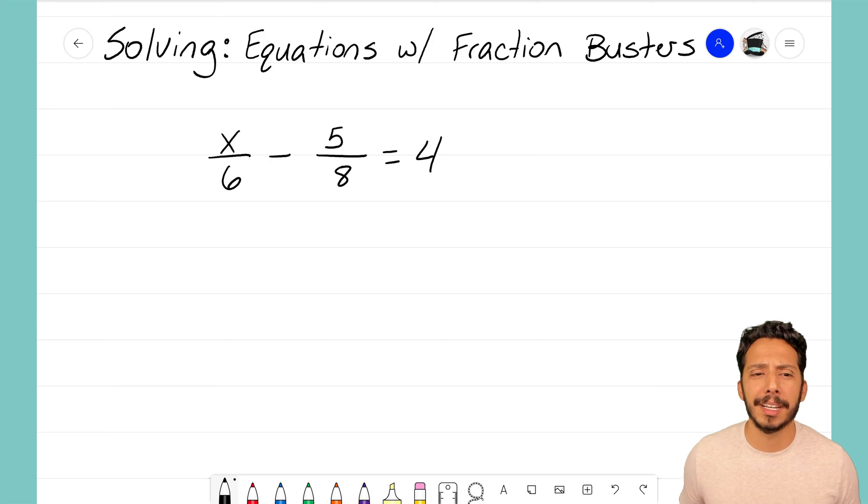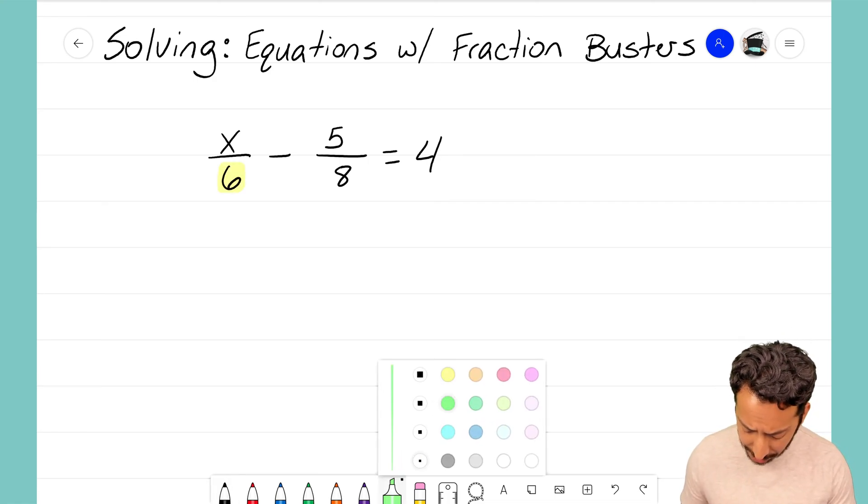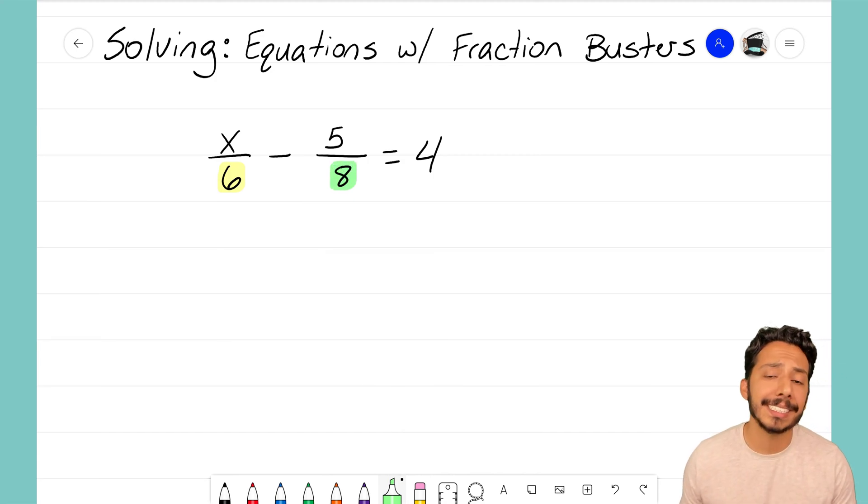kind of complicated, right? I want to figure out what x equals—I don't know what that number is—but the way it looks is a little confusing because we have two fractions there on the left-hand side and they both don't have the same denominator. The one on the left has a 6, the one on the right has an 8, so we can't combine them. Now here is where fraction busting is going to come into play.